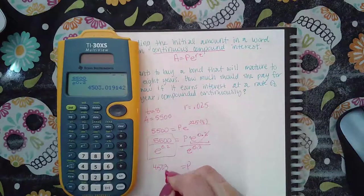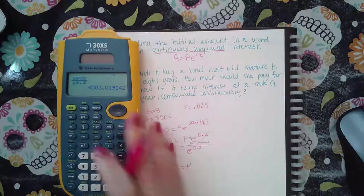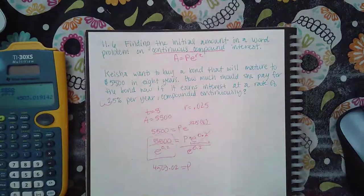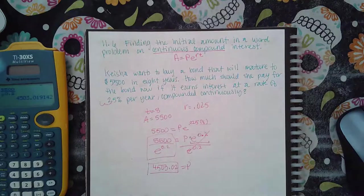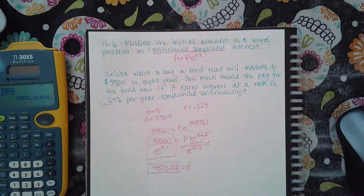And I get four five zero three point zero two. Because it's money, right? So I would have to invest this amount now in order for it to grow to that amount after eight years.